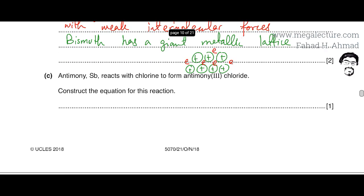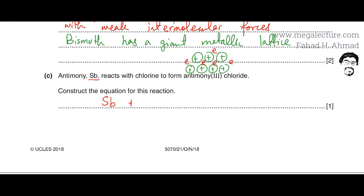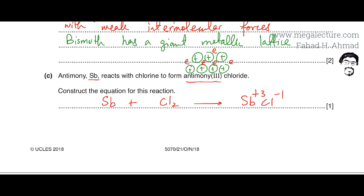The next part states that antimony reacts with chlorine to form antimony(III) chloride, and we need to construct the equation. The symbol for antimony is Sb. Sb reacts with chlorine, which is diatomic, to produce antimony(III) chloride. Antimony has a charge of +3 and chlorine (group 7) has a charge of −1. Using the crisscross method, the formula of the compound is SbCl3.